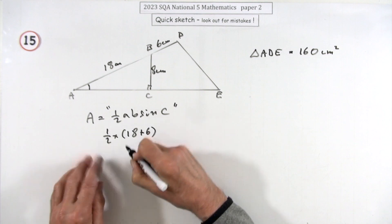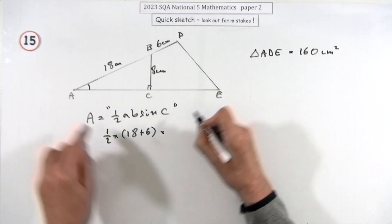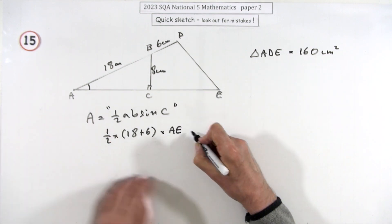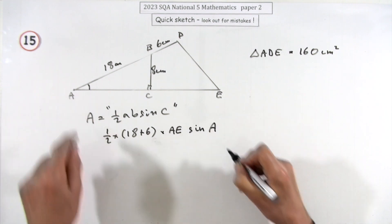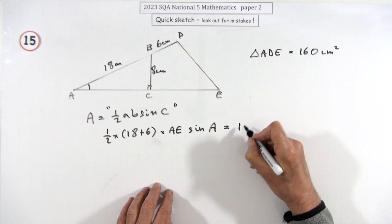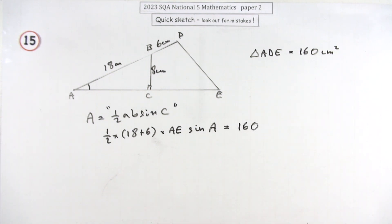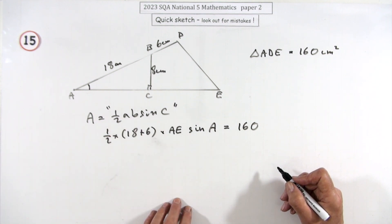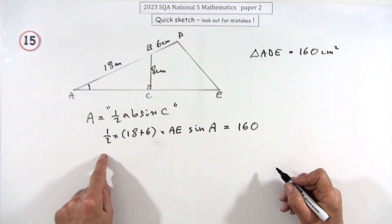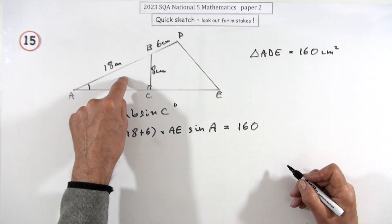What would that be? A half of the two lengths of the big triangle. So they're working, one of them's 18 and 6, so that's 24. The other one's one I want, so I'll just call that AE, times the sine of, and it'll be that angle A. And that lot should come to 160. That's the way it works. Area of a triangle: a half of the two sides times the sine of the included angle.